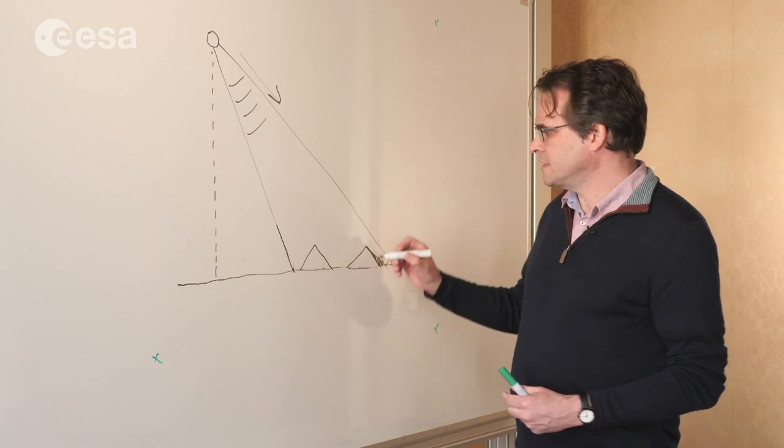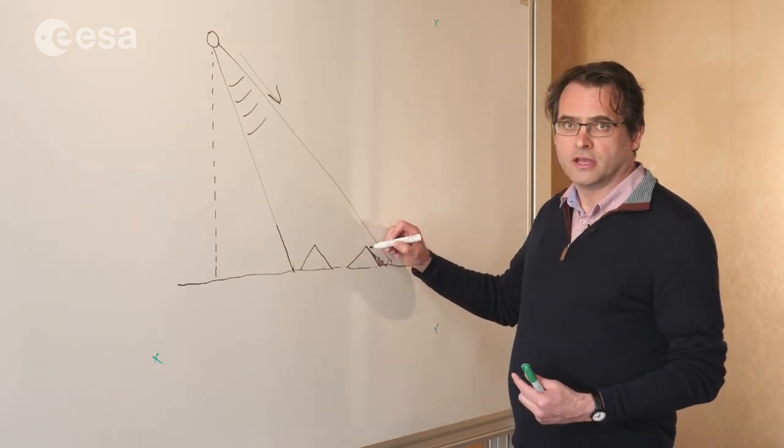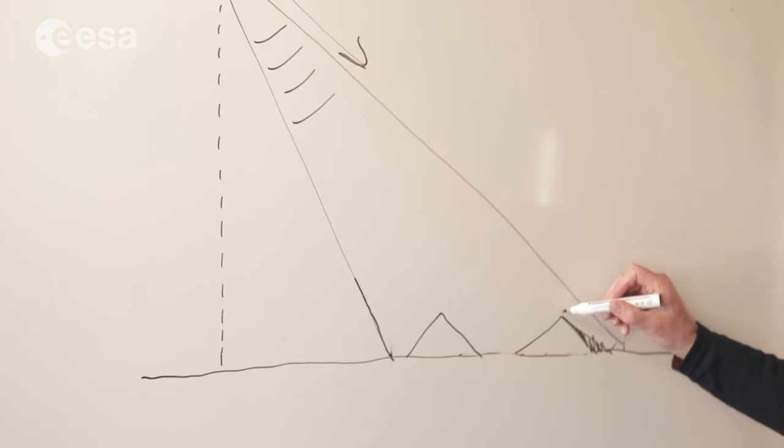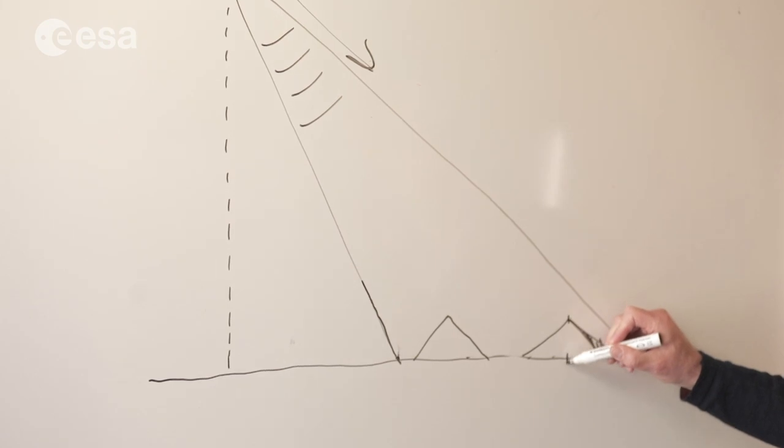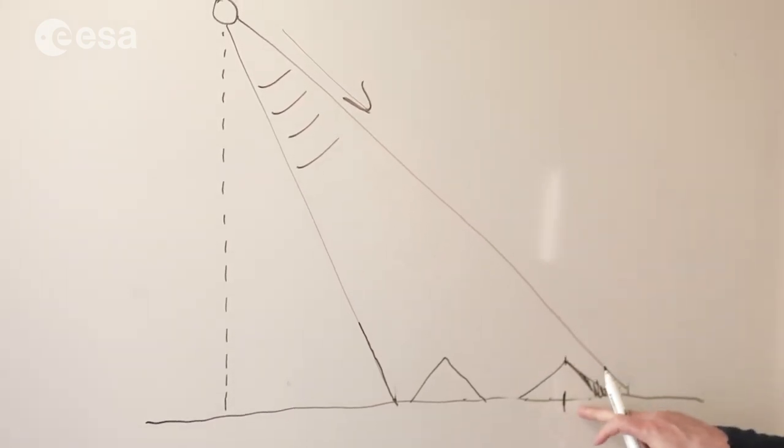The other thing that happens is that the features on the ground are not in their correct geographic location. The top of this little mountain, for example, should be geographically located directly beneath it onto some reference surface.